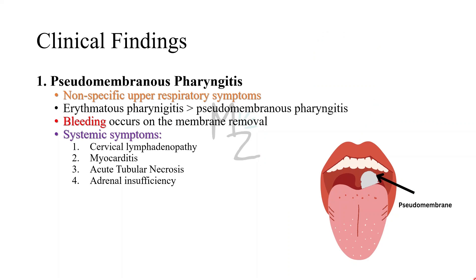Clinical findings. First: pseudomembranous pharyngitis with nonspecific upper respiratory tract symptoms including fever, sore throat, and cervical adenopathy. It begins as erythematous pharyngitis and progresses to pseudomembranous pharyngitis. On scratching the membrane, there will be bleeding. Systemic symptoms include cervical lymphadenopathy, myocarditis, acute tubular necrosis, and adrenal insufficiency — these are complications of diphtheria.